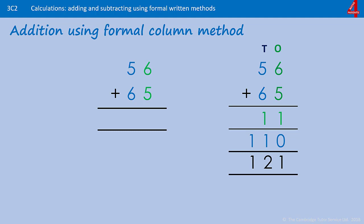Getting slightly more challenging again: 56 add 65. 6 add 5 is 11 — we put in the 1 and carry the 10. 5 add 6 is also 11, add 1 we carried is 12. From now on I am just going to refer to the carried digit as 1, even though it represents 1 lot of 10. Because there are no other columns to add up, we just put the whole of the 12 in there to make 121.